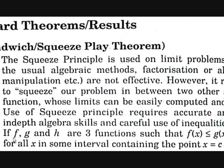Let's see the statement. If f, g, and h are three functions such that f(x) ≤ g(x) ≤ h(x), for all x in some interval containing the point x = c.